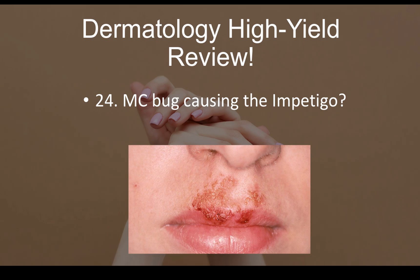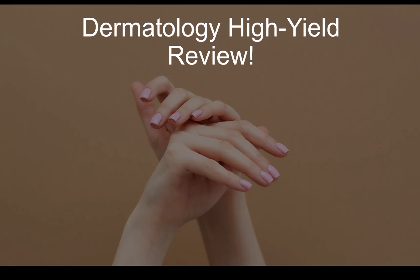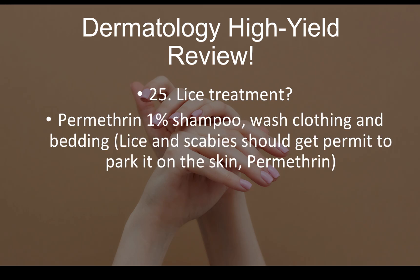Question number twenty-four: most common bug causing impetigo is Staph aureus. You can see that honey-colored crust lesion usually around the nose and mouth — that is impetigo caused by Staph aureus. Question number twenty-five: treatment for lice is permethrin 1% shampoo; also wash clothing and bedding.